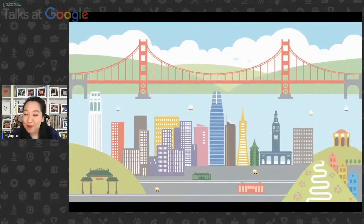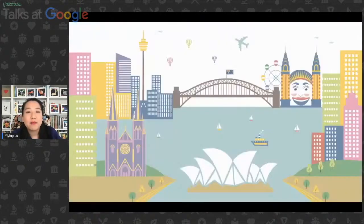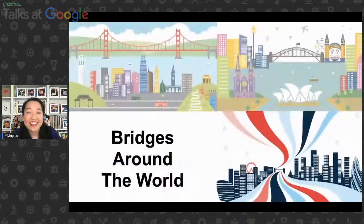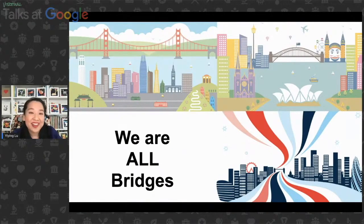I've introduced a lot of bridges here. This is one of my recent projects called 'Bridges Around the World' — I started drawing bridges, cityscapes of places I've stayed and lived, like Sydney and London. Every single piece always has a bridge. The final message is: we're all bridges around the world. Every one of you has the ability to be the bridge. We're all bridges. Thank you so much for having me.